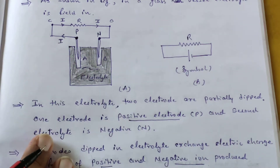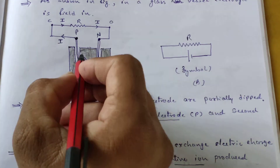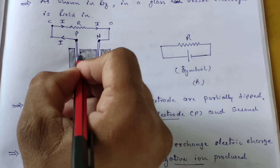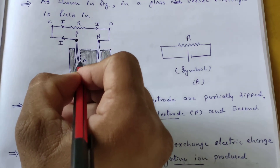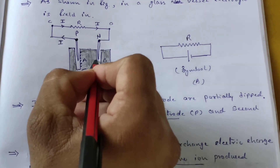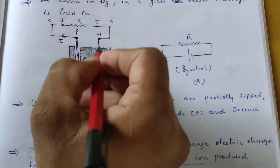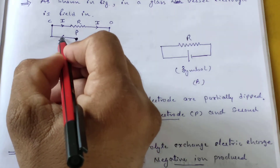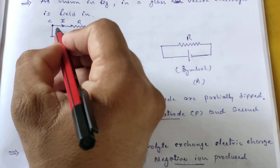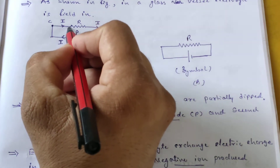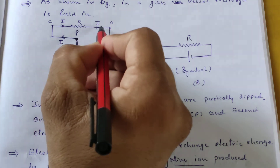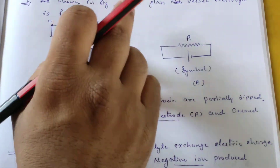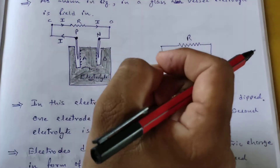Now we can see the external resistance. The ions are deposited at the electrodes, losing their charges. These charges will flow one by one in terms of current, and we can use this current in different positions of the circuit.